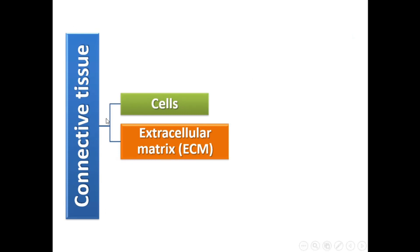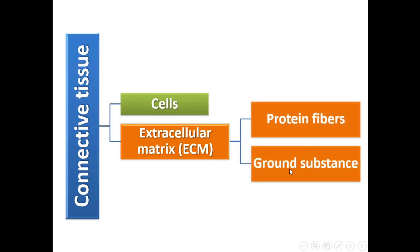Connective tissue, like other tissues, has two components: cells and extracellular matrix. Unlike epithelium, muscle tissue, and nervous tissue, which are mainly formed by cells, the major component of connective tissue is the extracellular matrix. The extracellular matrix consists of protein fibers and ground substance, so we can say each connective tissue has three components: cells, protein fibers, and ground substance.